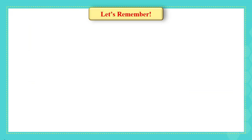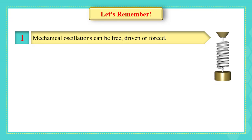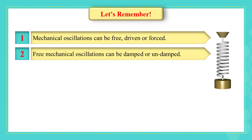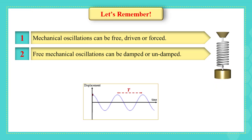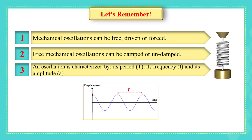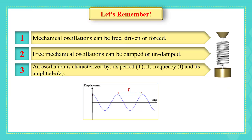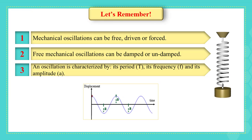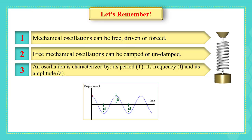let's remember what we took in the last video, video number 1. We said that mechanical oscillations can be free, driven, or forced. Free mechanical oscillations can be damped or undamped. Finally, we said that an oscillation is characterized by its period, its frequency, and its amplitude.